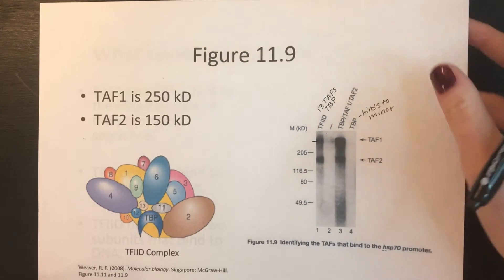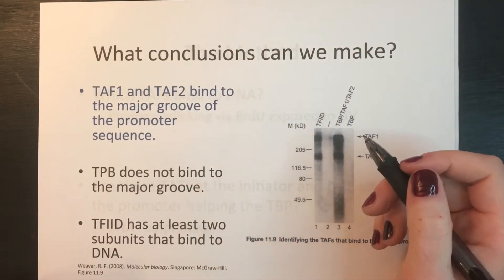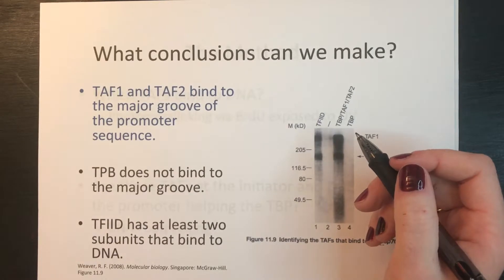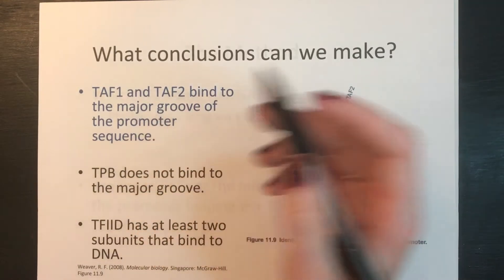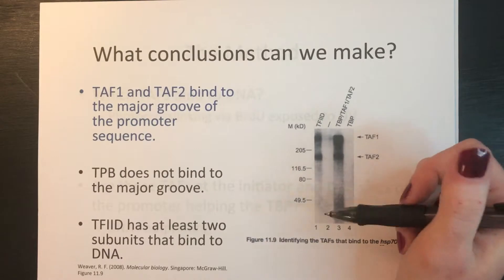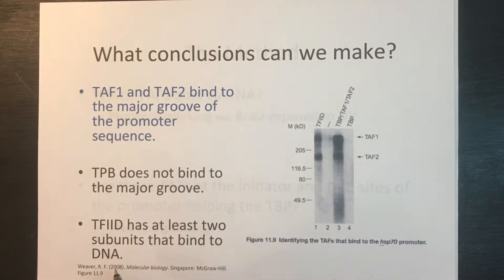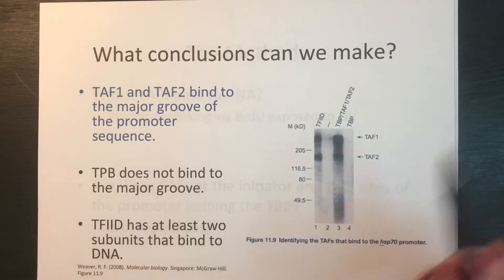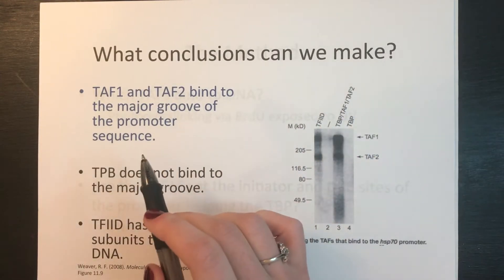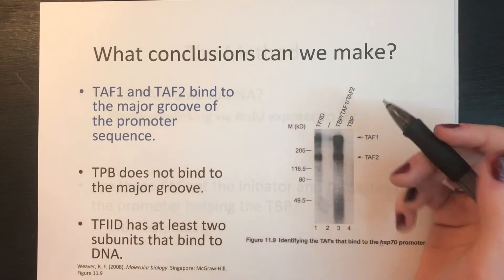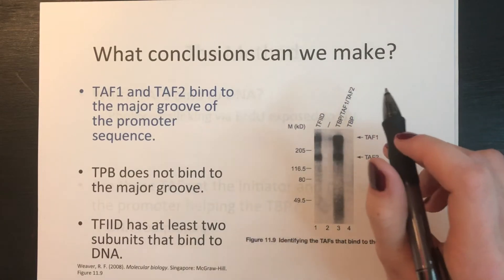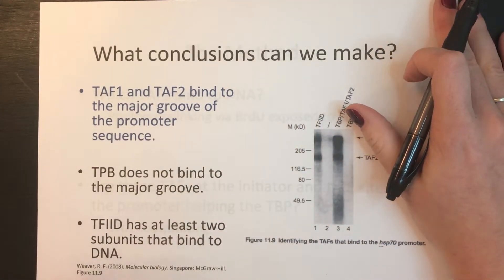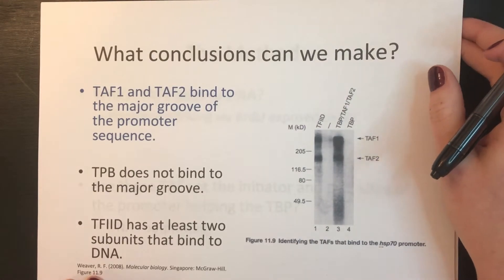The most important conclusion from this gel is that TAF1 and TAF2 are the subunits of TF2D that bind to the major groove of the promoter sequence. We can also conclude that the TF2D complex binds to DNA via at least two subunits, and that TBP does not bind to the major groove. Note that we cannot conclude from this gel alone that TBP binds to the minor groove — only that it does not bind to the major groove.